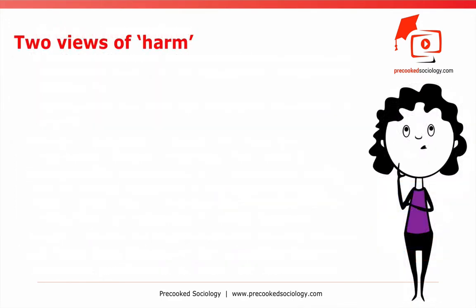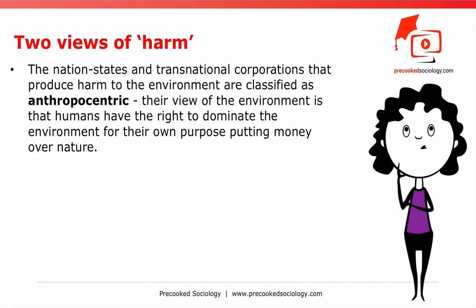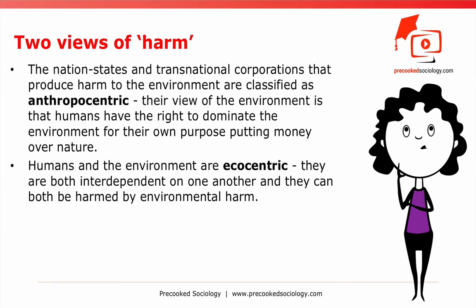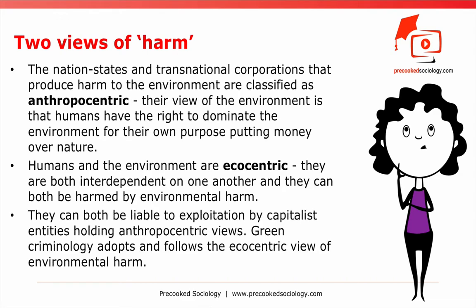Within the philosophy of green criminology come two important definitions of harm to the environment. On one side, nation-states and transnational corporations that produce harm to the environment are classified as anthropocentric — meaning humans have the right to dominate the environment for their own purpose, putting money over nature. On the other side, humans and the environment are ecocentric, meaning they are both interdependent on one another and can both be harmed by environmental harm. Both can be liable to exploitation by capitalist entities holding anthropocentric views. Green criminology adopts and follows the ecocentric form of environmental harm.